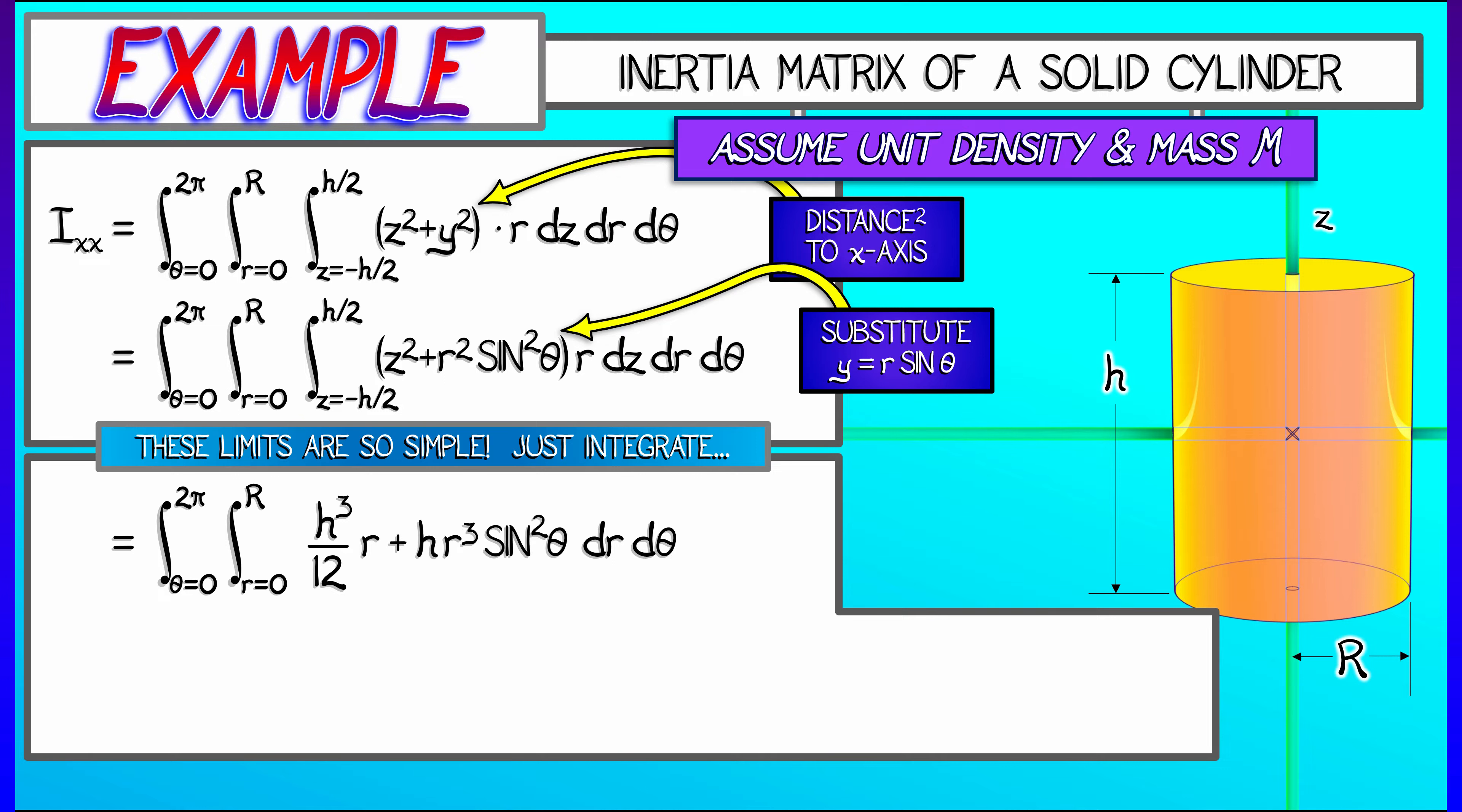Now my next step is to integrate both of these terms with respect to R. The first term is going to be not so bad. That's going to give me capital R squared over 2. When I multiply that by h cubed over 12, that gives me h cubed capital R squared over 24. The second term, the R cubed integrates to capital R to the fourth over 4 times h times sine squared theta.